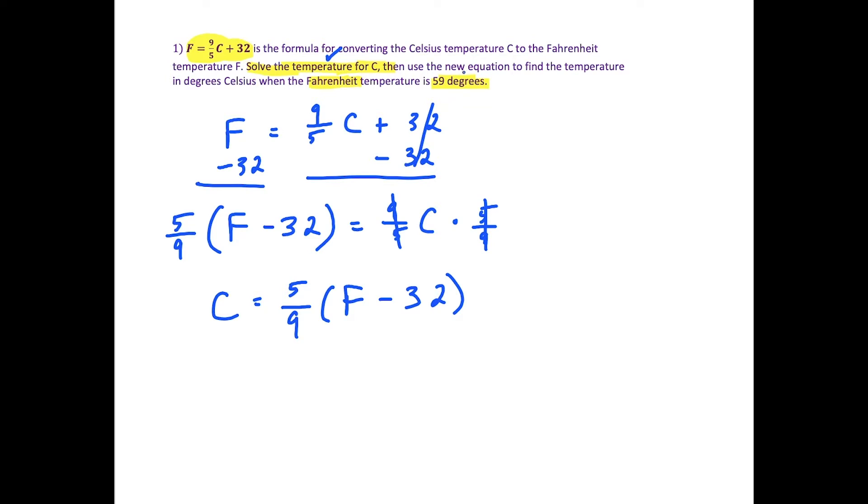Now we want to use this equation to find the temperature in degrees Celsius when Fahrenheit is 59 degrees. We have C equals 5/9, and we want to know the temperature when F equals 59, so we plug in F equals 59 and simplify.